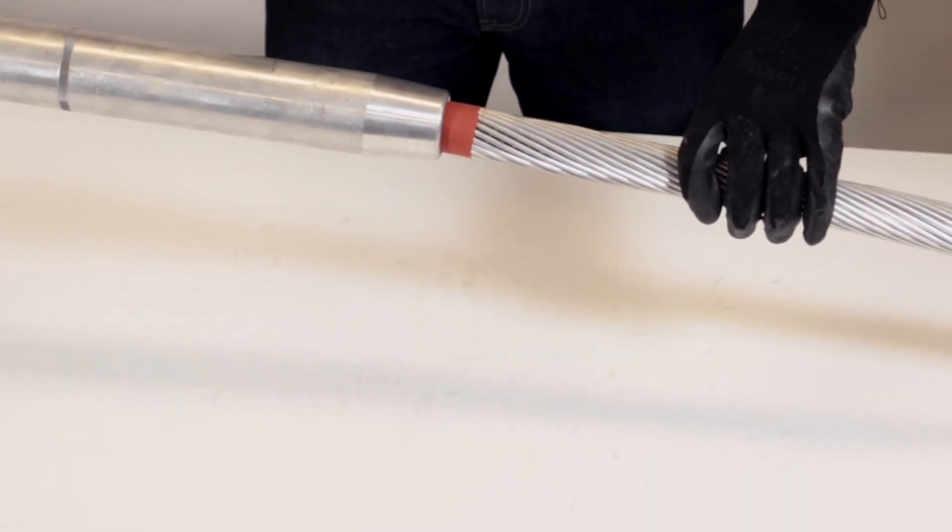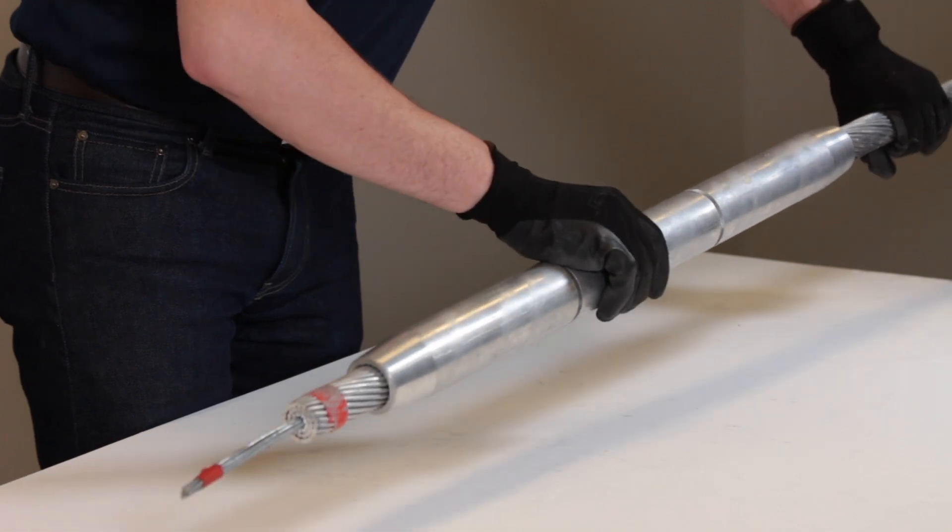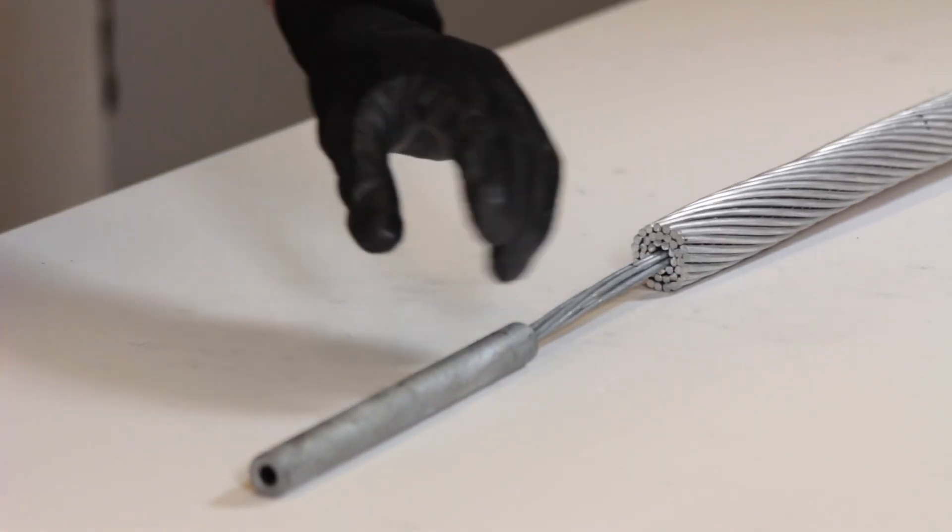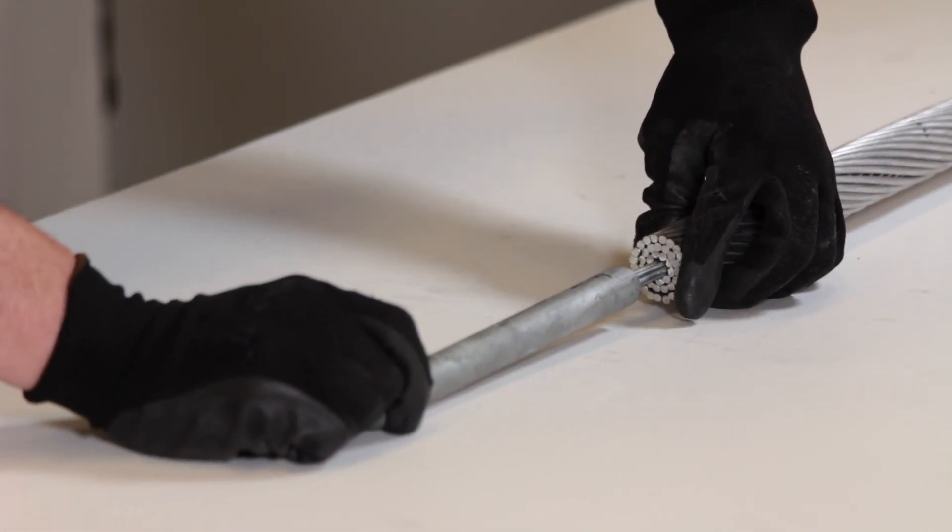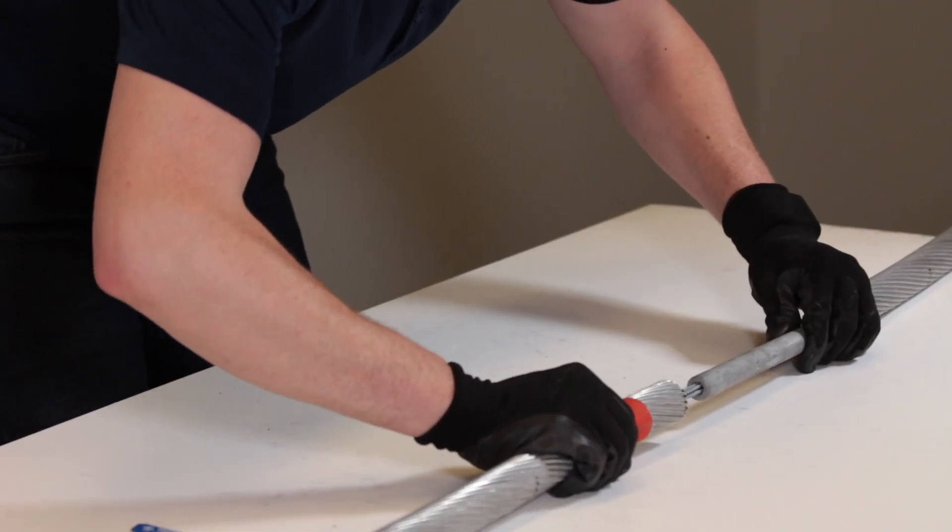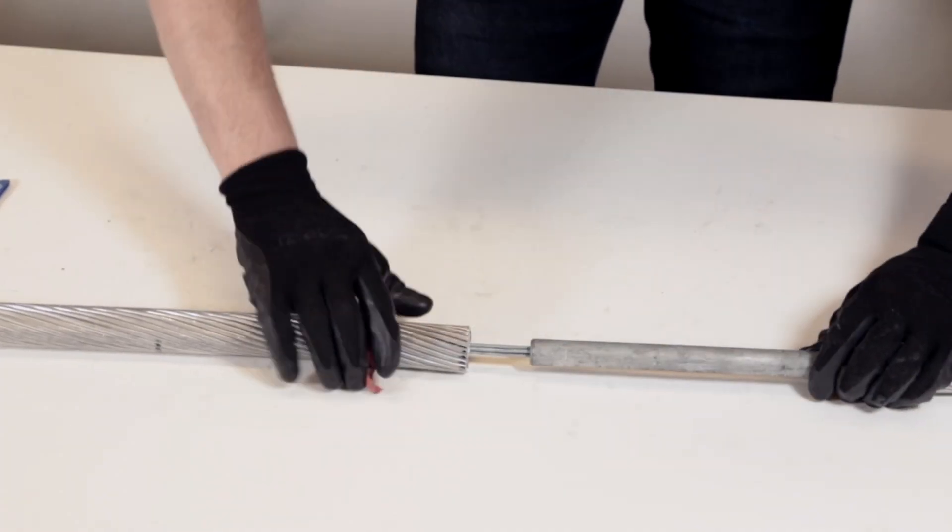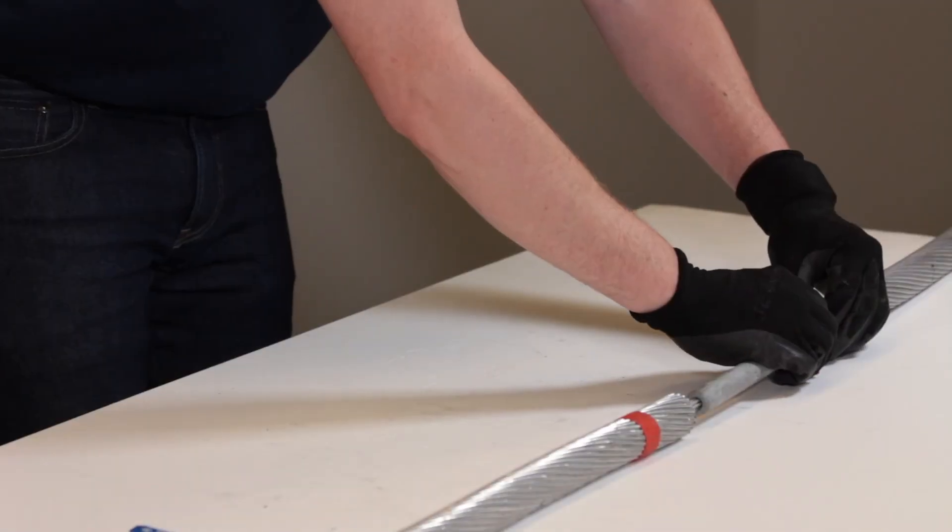Slide the aluminum splice body all the way onto the conductor past the exposed steel core. Remove the tape from the conductor core and insert it into the steel core splice, lining up the end with the mark previously made on the strands. Repeat this step with the other conductor and ensure that the core splice is properly centered.